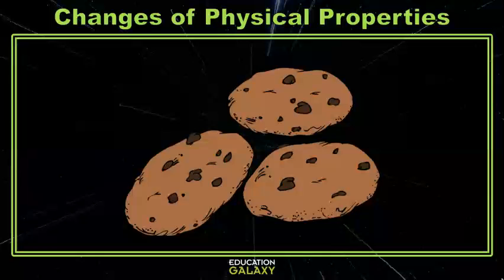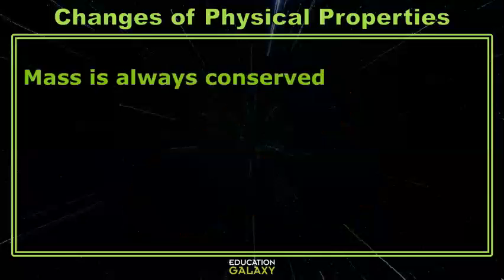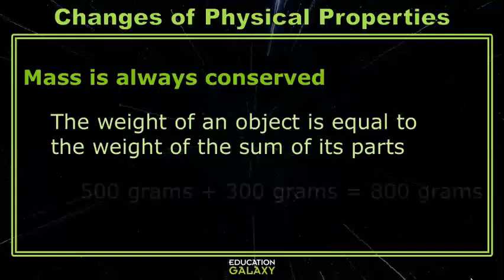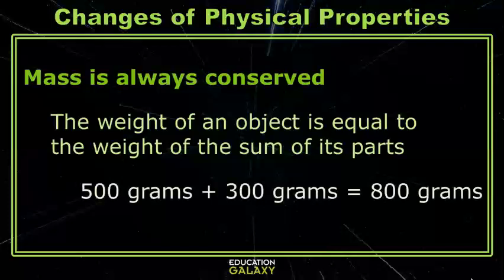Any type of chemical reaction is also a chemical change. But something that both chemical and physical changes have in common is that mass is always conserved. That means the amount of mass is always going to be the same at the beginning and the end of the change. If we combine two substances, all we have to do is add their two weights to find the weight of the end product. For example, if I added 500 grams of rice cereal and 300 grams of marshmallows, I could expect to make 800 grams of Rice Krispie Treats.